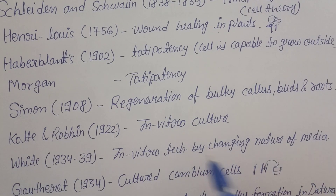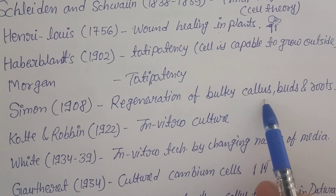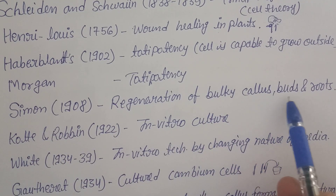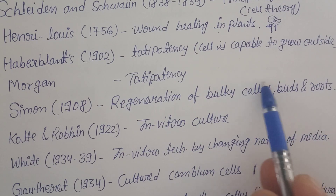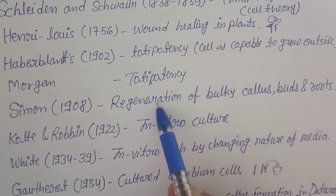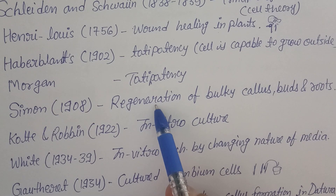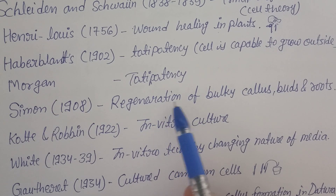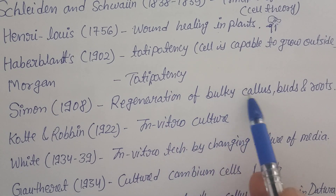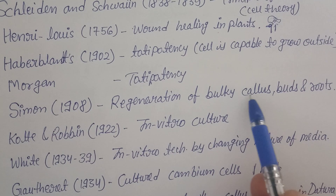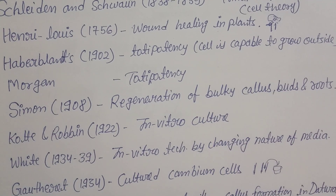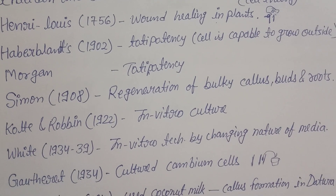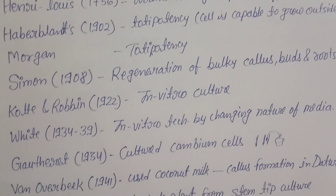Then Simon in 1908 told about the regeneration of bulky callus, buds, and roots. Callus can be taken and it can be regenerated further — cell multiplication and cell division is possible in this callus. That was told by Simon, and it was a good contribution at that time.